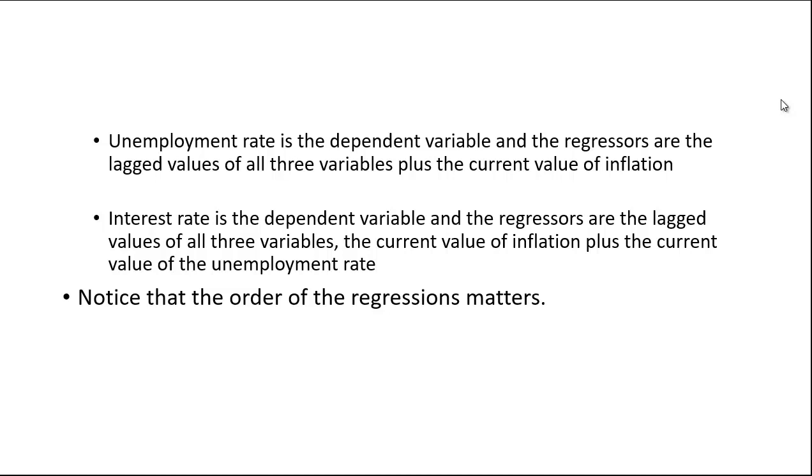You can see that the order matters. If we did the interest rate first, it would just be dependent on the lagged values of the three variables and nothing else. But this is the last equation, so you need the current value of the inflation rate and the current value of the unemployment rate.